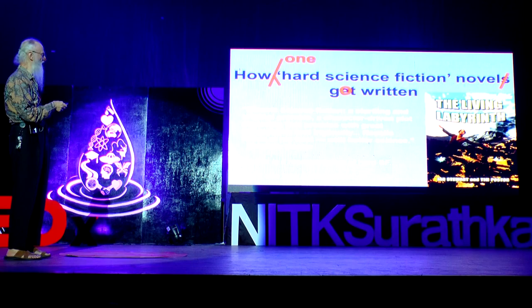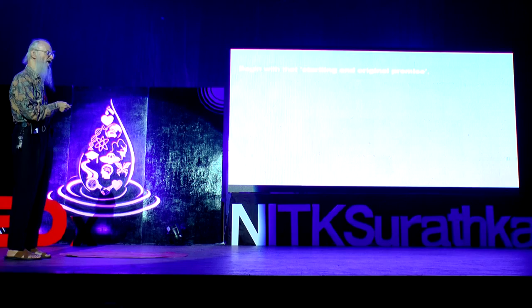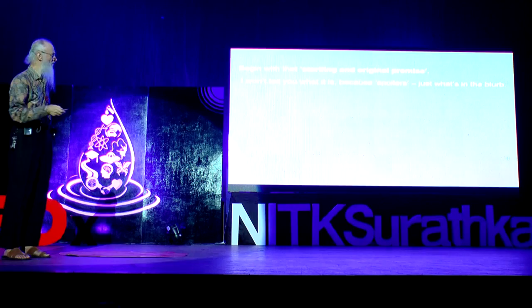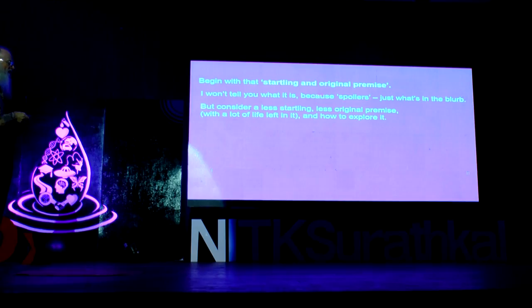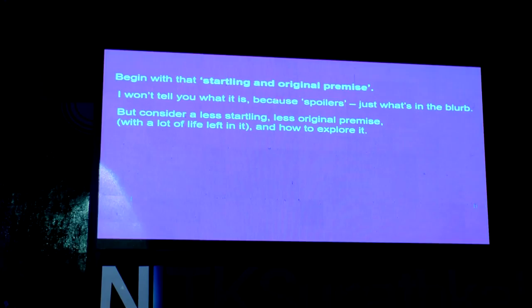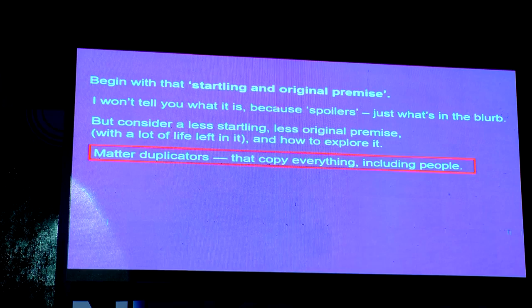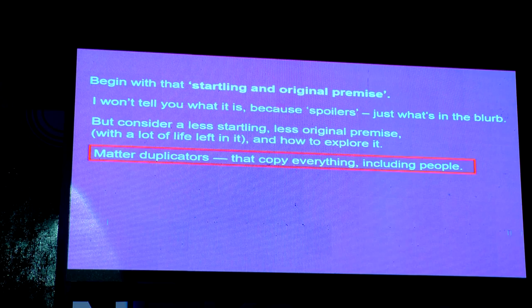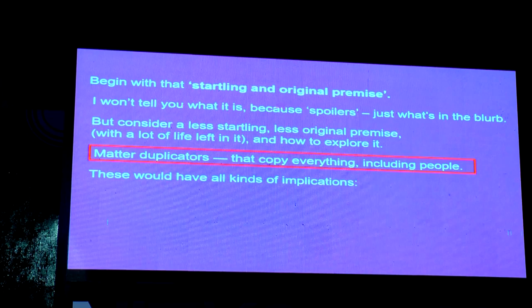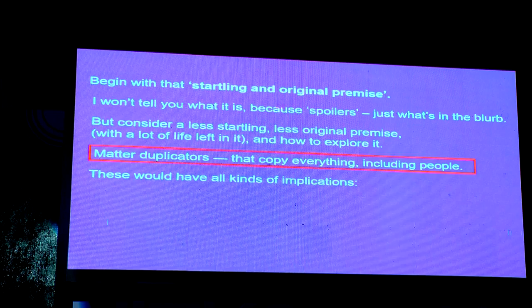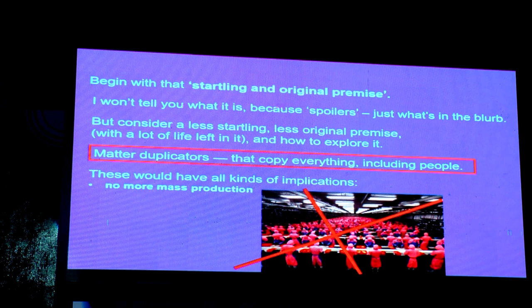Let's see how it was written in terms of plot design and world design. Startling and original premise — I'm not going to tell you the startling and original premise because that's a spoiler. But consider a less startling and less original one, because people have written books about it before, a very nice one, and how you might explore it. Suppose you have matter duplicators. You can make copies of everything, anything, including people. This would have all kinds of implications. I can quote several wonderful novels on that.